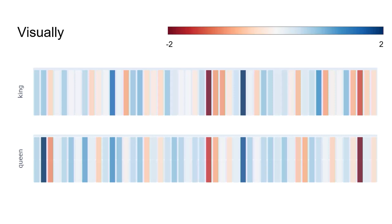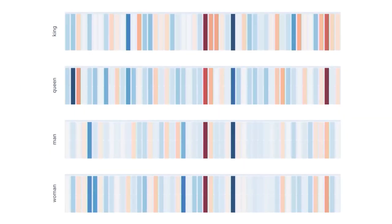How should we interpret this diagram? If a value is close to negative two it's going to be dark red; if it's close to positive two it's going to be an intense blue or purple color. I've shown the word vectors for 'king,' 'queen,' 'man,' and 'woman.' AI experts do not actually know what each dimension means, but once we have these vectors we can try to make a best guess of what each dimension represents.